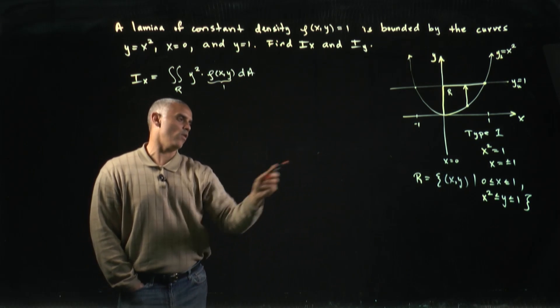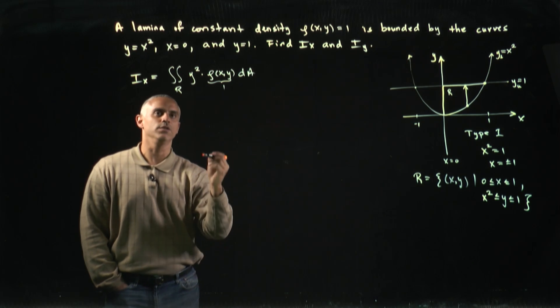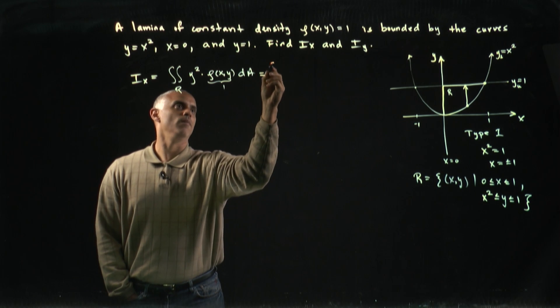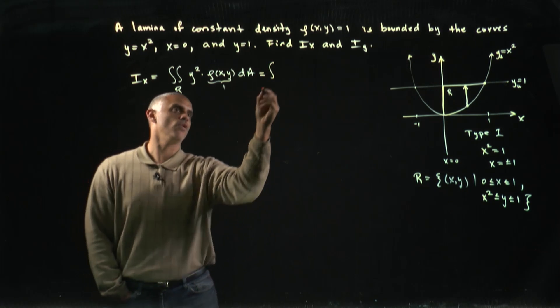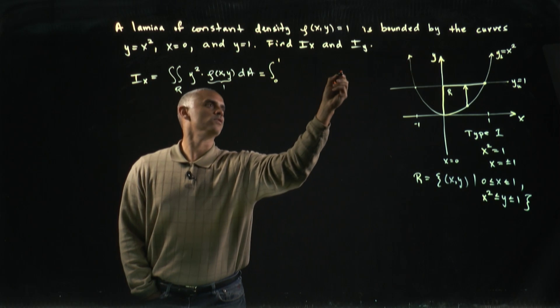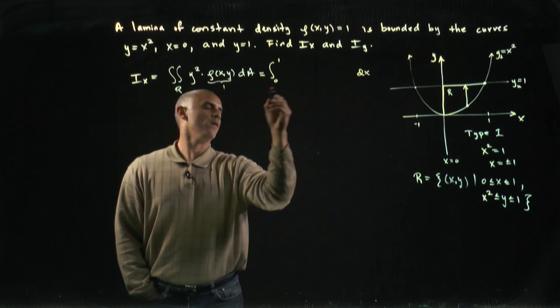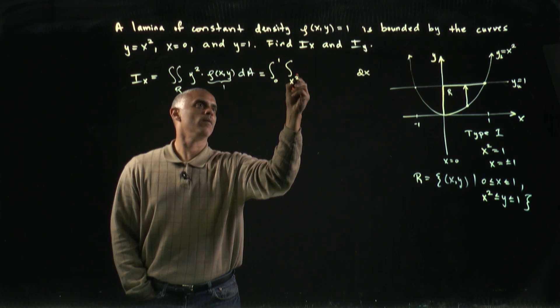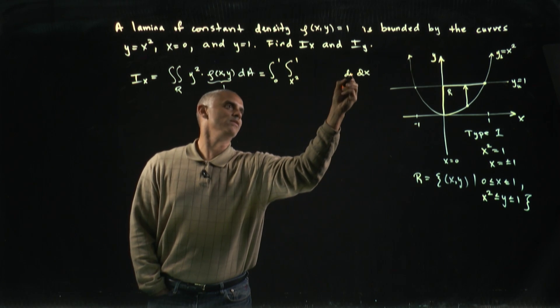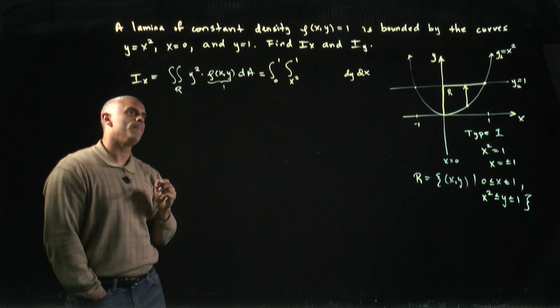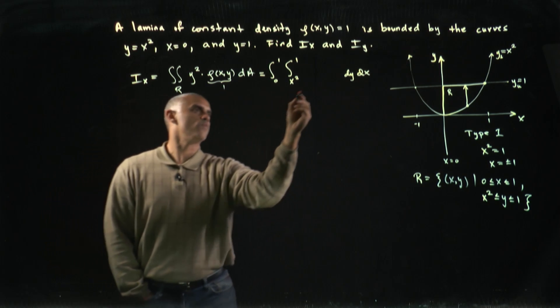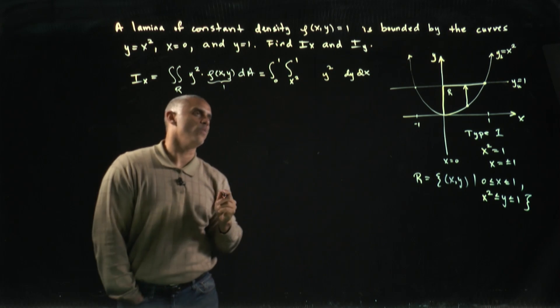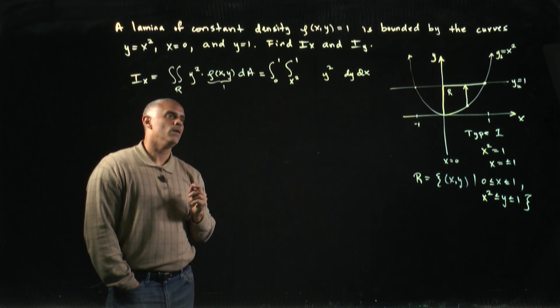So we really just have the integral of y squared, and then our dA will fall out once we put in our limits of integration. This becomes the integral from 0 to 1 on x, so I'll put a dx here, and then x squared to 1 on y. I'll put my dy on the inside, and then y squared times 1 is just going to be y squared.